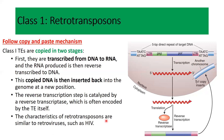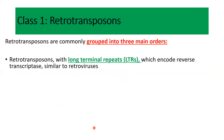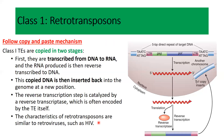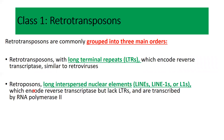The characteristics of these retrotransposons are similar to retroviruses such as HIV. There are three major subclasses of class one retrotransposons. The first is long terminal repeat sequences (LTRs), which encode the reverse transcriptase enzyme, similar to retroviruses. The second group is long interspersed nuclear elements, or LINEs, which also encode reverse transcriptase but do not carry LTRs, and are transcribed by RNA polymerase II.